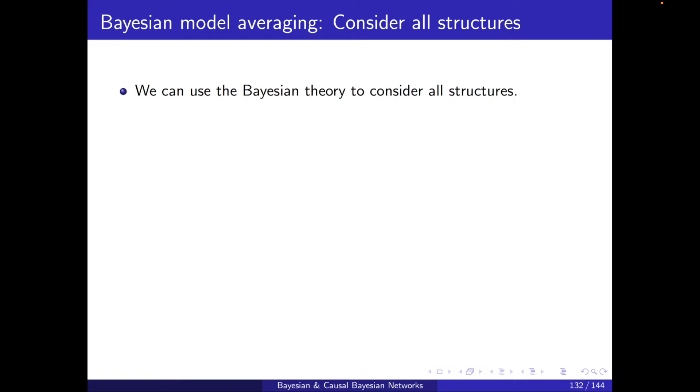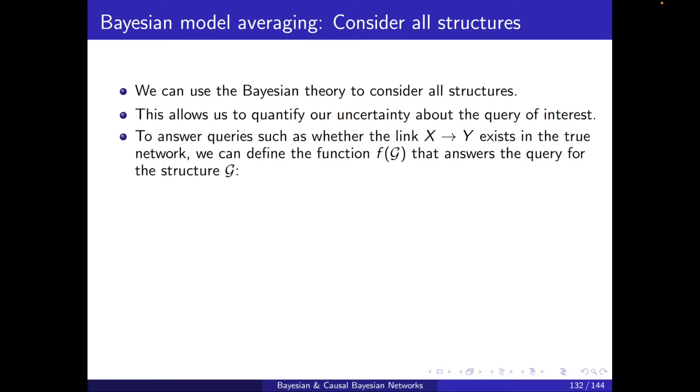We can use the Bayesian theory to consider all structures. This allows us to quantify our uncertainty about the query of interest. To answer queries such as whether the link X → Y exists in the true network, not necessarily what the true network looks like, but just if COVID and flu, for example, are linked or not. To answer this,